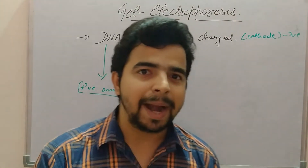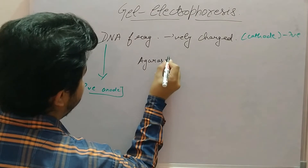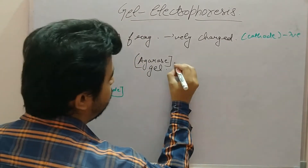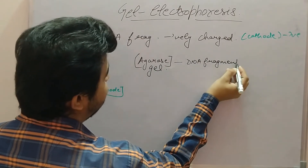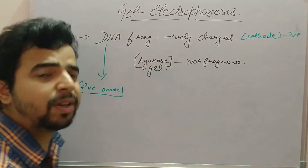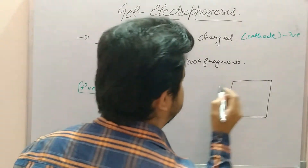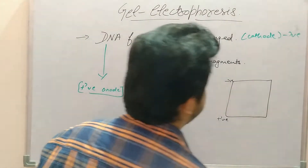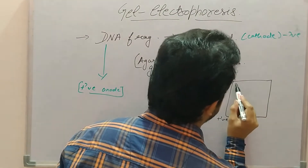We use a matrix known as agarose gel. This agarose gel is poured over DNA fragments to make a well-like structure over different segments of DNA. I will draw the structure — this is the chamber where we perform the experiment, with the cathode point on one side and the anode on the other.